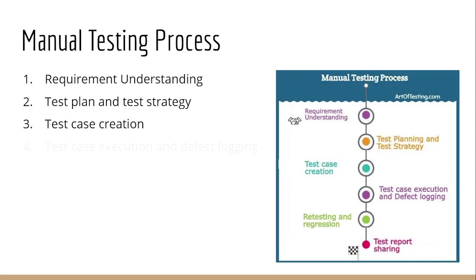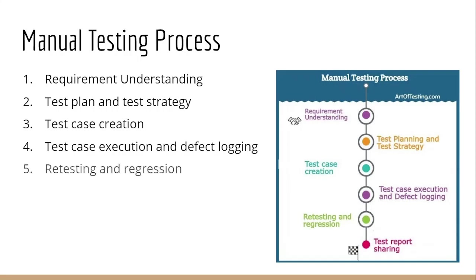Test Case Execution and Defect Logging: Once test cases are ready and the application is available for testing, we begin with test case execution, marking each test case as pass or fail and raising defects for each failure. Retesting and Regression: After bug fixing by developers, we retest the bug fixes and also do regression testing. This is to ensure that the bug fixes don't adversely affect other functionalities.